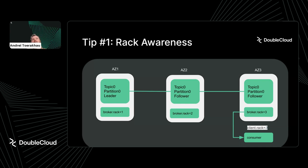The same can be applied to producers, but it's a bit trickier because you can only produce data to a leader — you cannot produce to a follower. So on the producer side, you should follow the leader. In some cases, following the leader is a reasonable approach. The key takeaway for the first tip is: think about network topology and rack awareness, as this can cut costs significantly in terms of traffic.